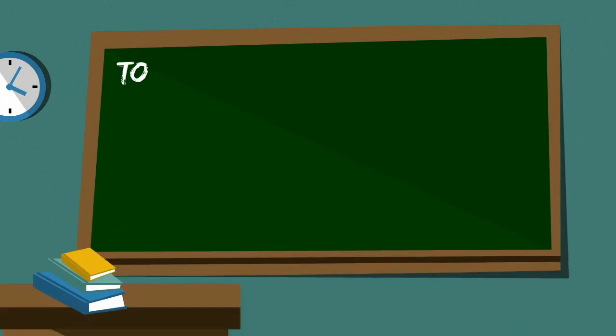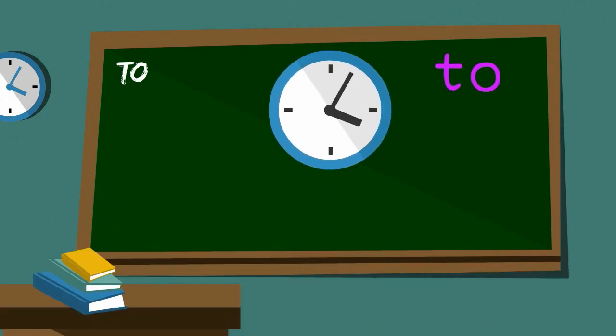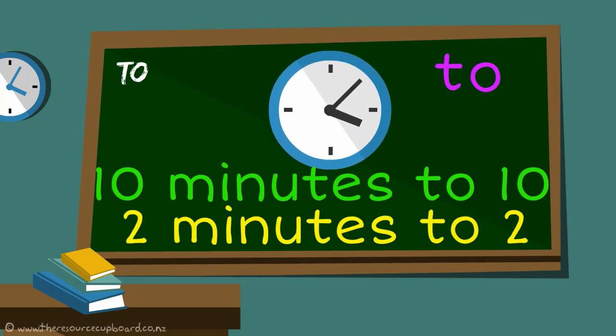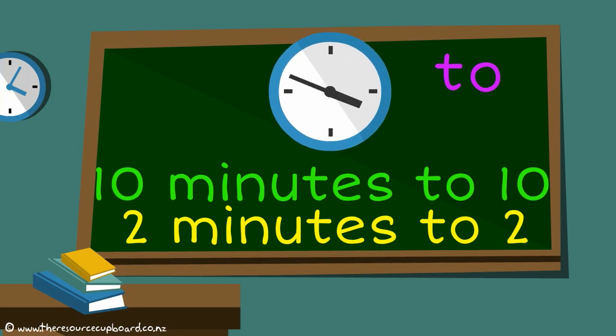The second two, T-O, tells us how much time is left before another certain time. It's ten minutes to ten. It's two minutes to two. The opposite of this two is past.